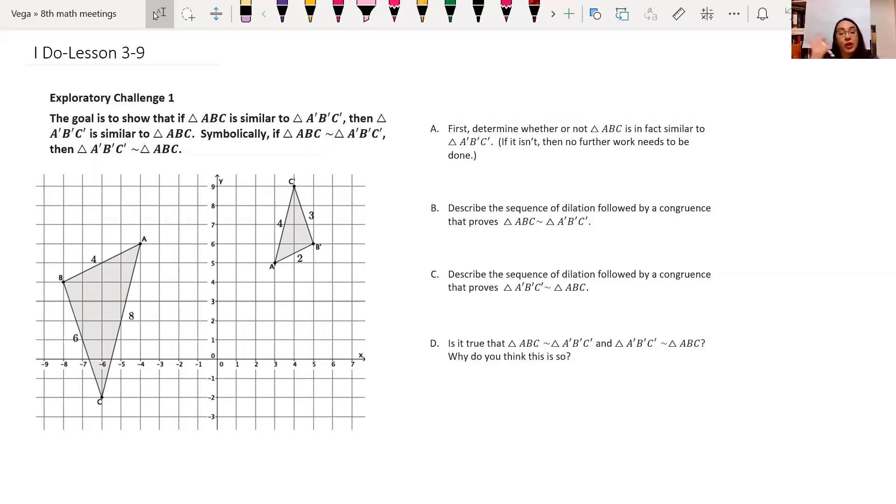In this case, we want to show that the triangle on the left being similar to the one on the right is always going to tell us that the one on the right is similar to the one on the left. The first step in exploring this is to determine whether or not these two triangles in our example are in fact similar. Type in the chat, do you think they're similar or not? Yes, these triangles are similar. We need reasons why, though.